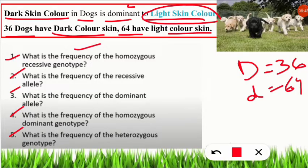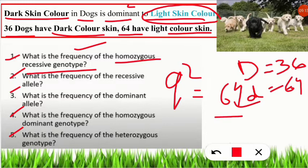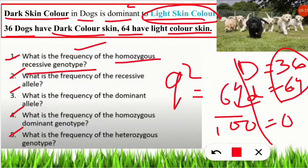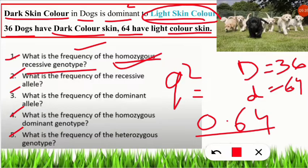Question 1: What is the frequency of the homozygous recessive genotype? Homozygous recessive means Q². Since light skin color is recessive and 64 dogs have light skin out of a total of 100, Q² equals 64 divided by 100, which gives Q² = 0.64. The first question is solved — the answer is 0.64.